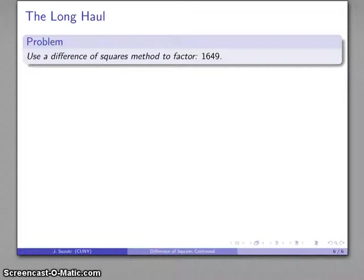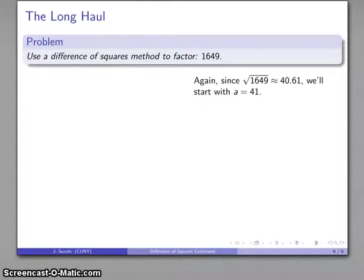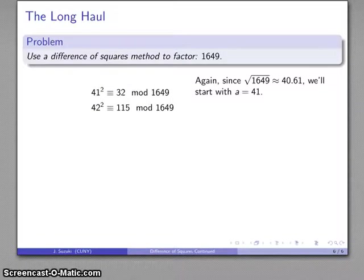Well, we may have longer problems, so, how about the number 1649? So, again, it doesn't do us any good to start before a equals 41, so we might as well start with that. 41 squared, 32 mod 1649. And, again, not obviously a perfect square, so we'll go on to the next. Not obviously a perfect square.